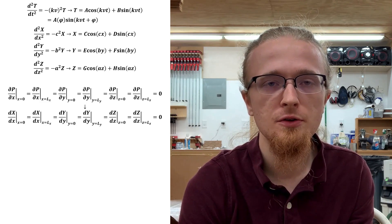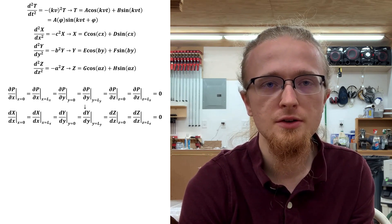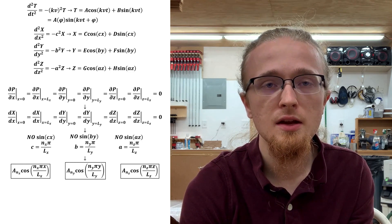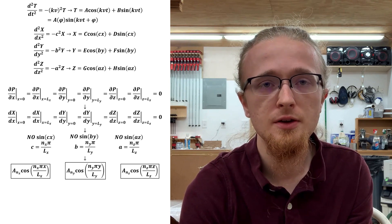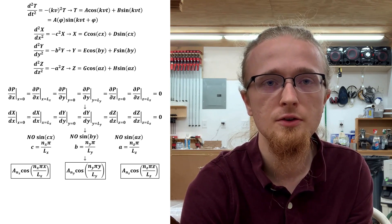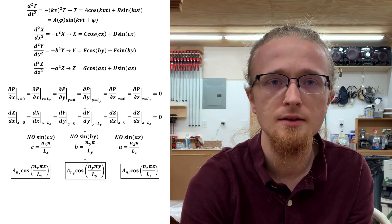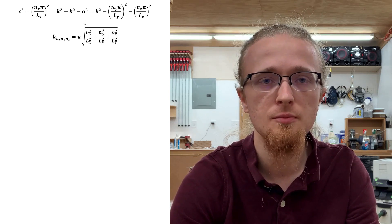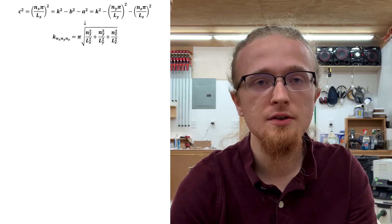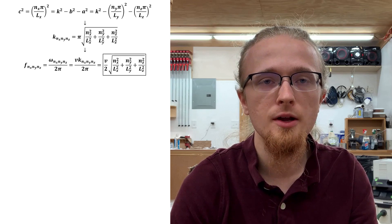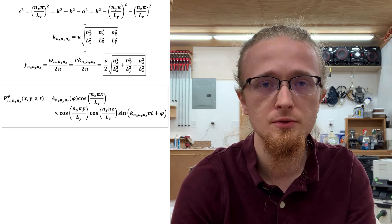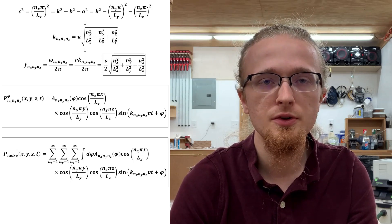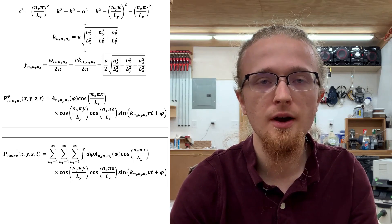Looking at the complete set of boundary conditions and all the spatial factor general solutions, we see that all boundary conditions are satisfied if we reject all the sine solutions and set the multiplicative constants in the arguments — lowercase a, b, and c — equal to some positive integer nx, ny, or nz times pi divided by the associated side length. Selecting these values for a, b, and c ultimately fixes k, where we take the positive square root since we're interested only in positive harmonic frequencies. By fixing k, those selections fix the harmonic frequencies. We can also write out the associated harmonic pressure functions by multiplying together all the finished solution factors. Beyond this, we can write a solution for arbitrary noise in a cuboid cavity as an arbitrary linear superposition of the harmonic pressure functions, where the amplitude constants are fixed by initial conditions.